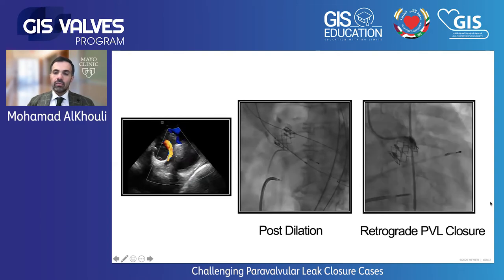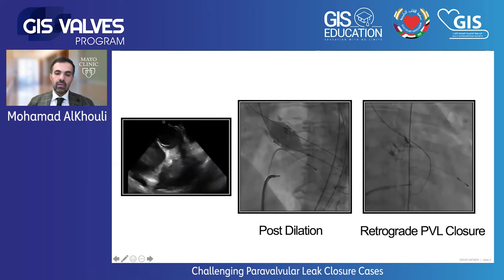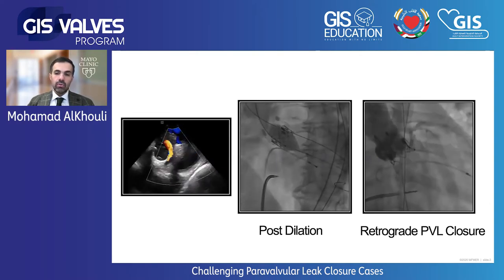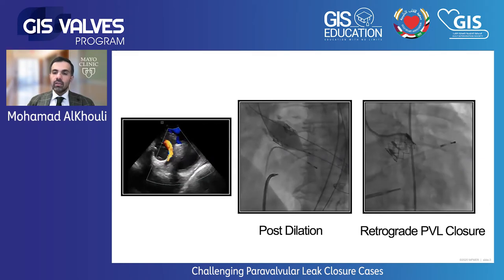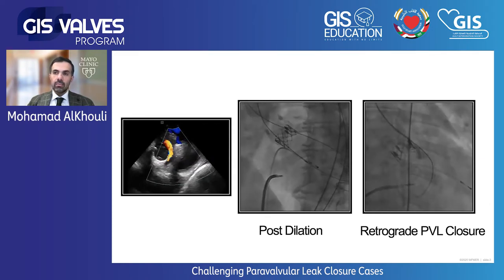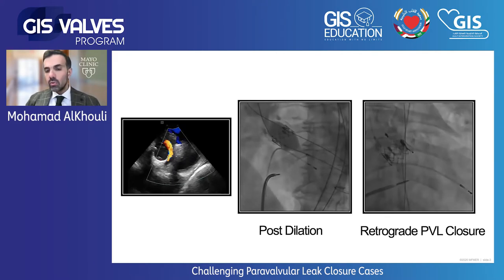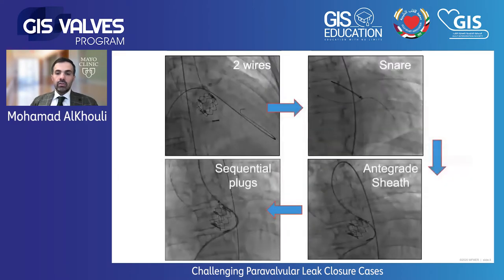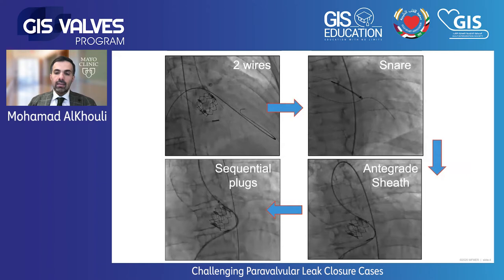That was extremely difficult. As you can see on ICE on the left side of the screen, because the leak is circumferential, you're going to need multiple plugs to close this. With the retrograde approach and the challenges of abdominal aortic dissection, we couldn't close it adequately retrograde. So we switched to an alternative route — we kept our access retrograde to the LV, went through the atrial septal defect the patient already had, put a wire antegrade, and married the two wires via a snare.